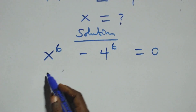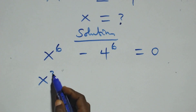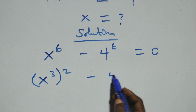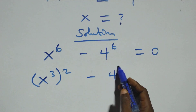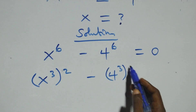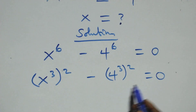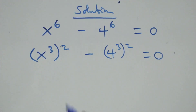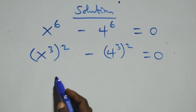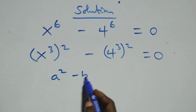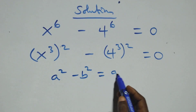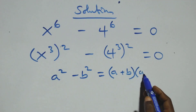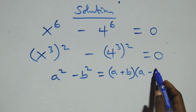Now we can also write this as x raised to power 3 squared minus 4 raised to power 3 squared equals to 0, since 2 times 3 equals 6. This follows the identity a squared minus b squared, which is the same thing as a plus b into bracket open bracket a minus b.